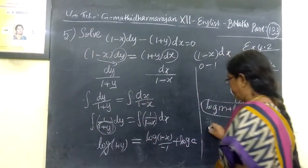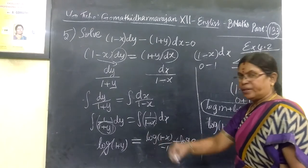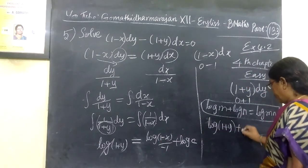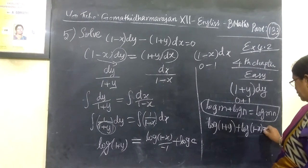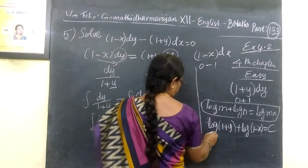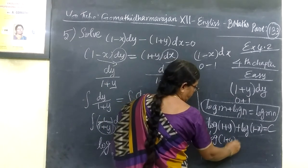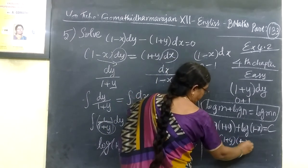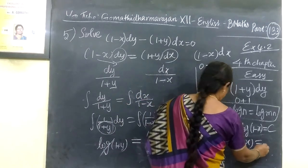Considering the problem, log(1+y). Here the minus 1 becomes plus. So plus log of (1-x) equal to log c. If log m plus log n is equal to log(m*n), then log of (1+y)*(1-x) equal to log c.